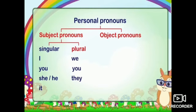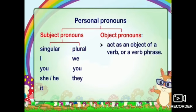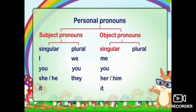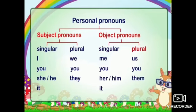Object pronouns act as the object of a sentence — a verb or verb phrase. They also come in two forms. Singular form: me, you, her, him, it. Plural form: us, you, and them.